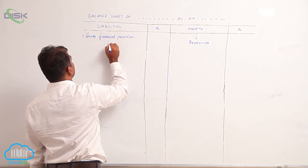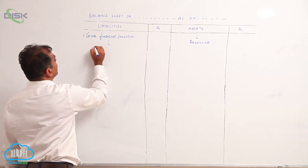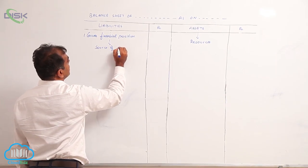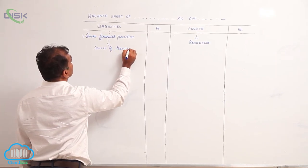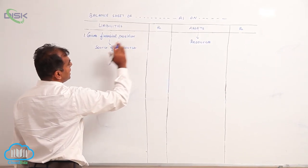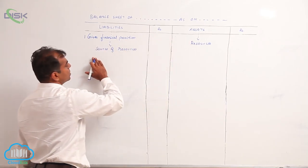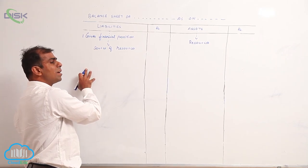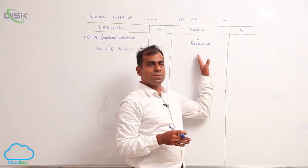Liabilities are representing your source of resource. Resource means how did you or who gave these resources to you. Source of resources means who? Persons or which organizations gave you these resources.